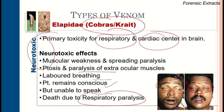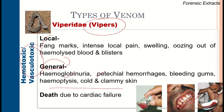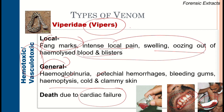Vipers produce hematotoxic or vasculotoxic venom. This generally causes hemoglobinuria, petechial hemorrhages due to coagulation defects, bleeding gums, hemoptysis, and cold clammy skin. Death is due to cardiac failure. Fang marks, intense local reaction, swelling, oozing of hemolyzed blood, and blisters are characteristically seen in viper bites, with local phenomena more common in viper bites than in neurotoxic snake bites.